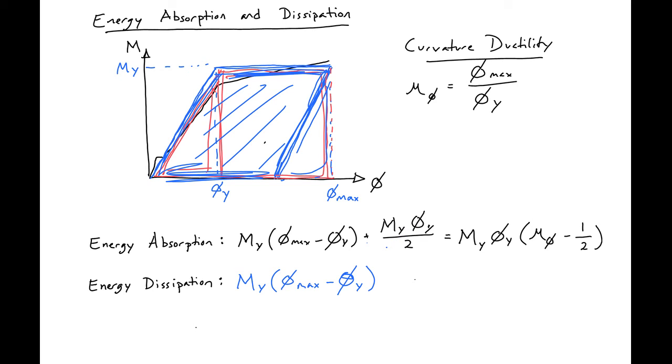And we can find that our energy dissipation is then equal to My phi_y times our curvature ductility minus one.